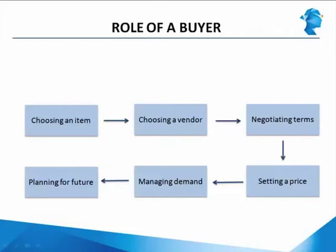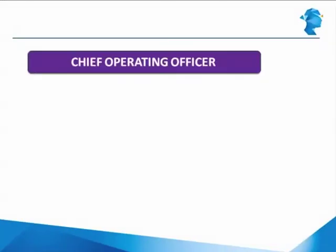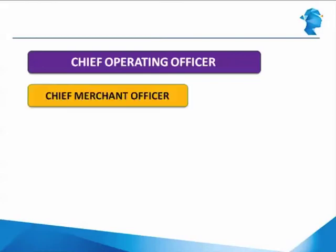Let us see how the merchandising function, or the buyers in the retailer's organization, are organized. The buying function reports to the chief operating officer, who is responsible for all operations including merchandising, store operations, and distribution. The merchandising function is handled by a chief merchandising officer, who is the senior most buyer and is responsible for all the categories that a retailer sells.